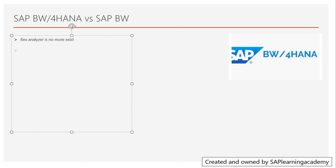In terms of modeling, it has also changed because now we have to do the modeling in SAP HANA Studio. In the earlier version of BW we had to do it in SAP GUI, but now we have to use SAP HANA Studio — this is one of the major changes in modeling. Also, a few things are not supported like PSAs — PSA is not available, so we need to remember that we are reducing the number of layers.